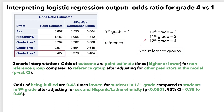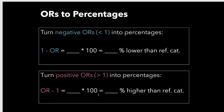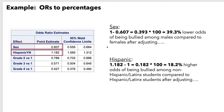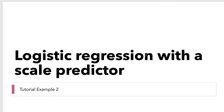These findings about grade are consistent with our alternative hypothesis based on our descriptive statistics, which show that as grade increases, being bullied decreases. We may want to turn odds ratios into percentages using this formula — note the formula is slightly different for negative and positive ORs. For sex, the OR is negative, so we subtract it from 1 and get 39.3% lower odds among the non-reference category. Since the odds ratio for Hispanic_YN is positive, we subtract 1 from it and end up with 18.2%.